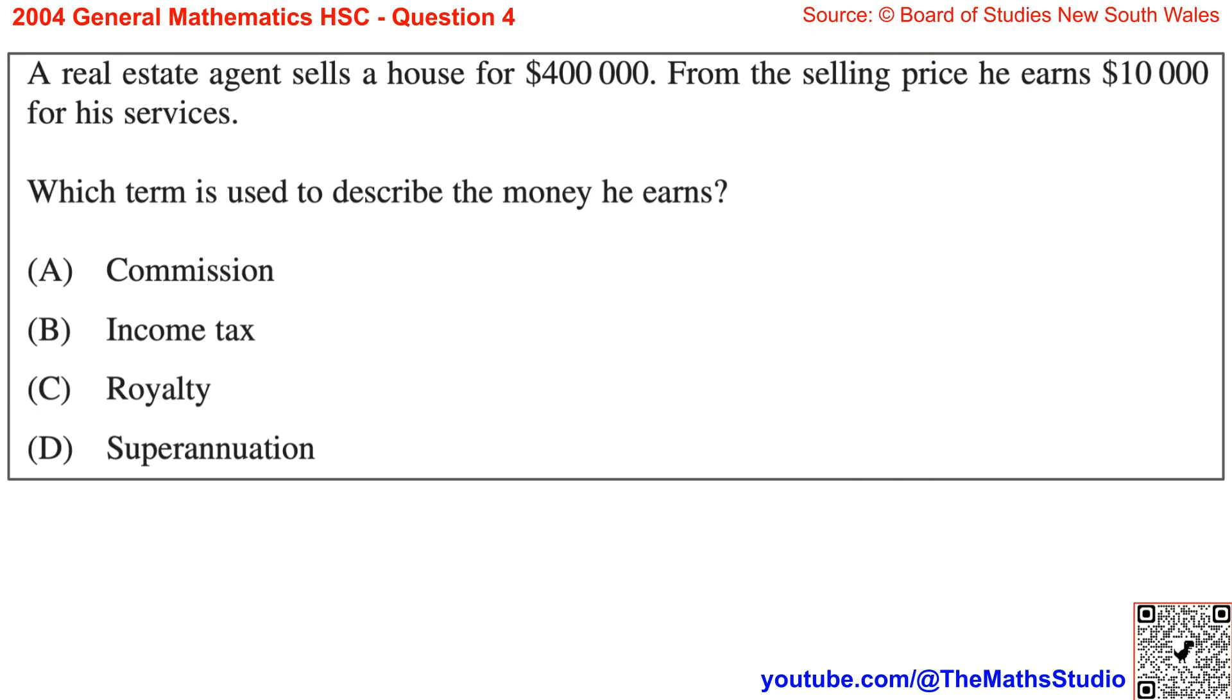Question 4: A real estate agent sells a house for $400,000. From the selling price, he earns $10,000 for his services. Which term is used to describe the money he earns?